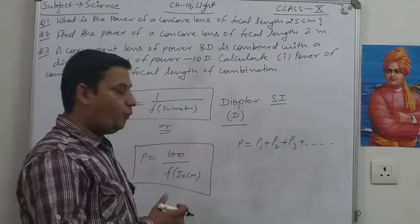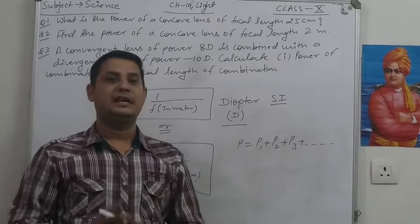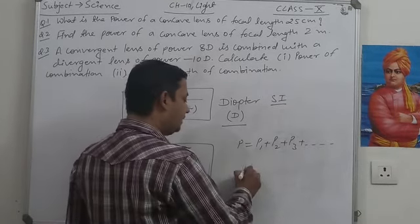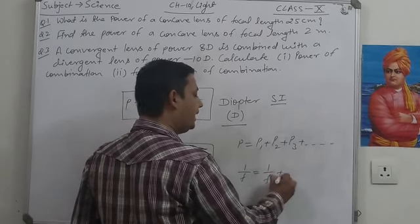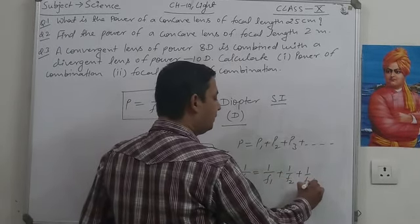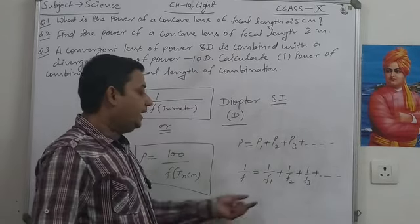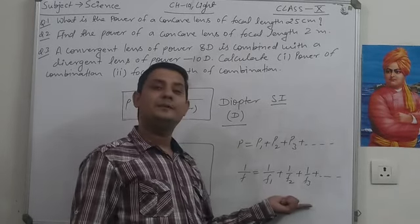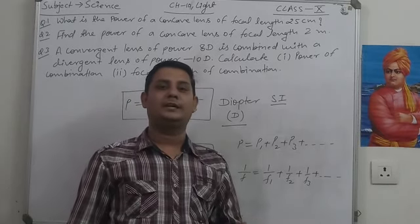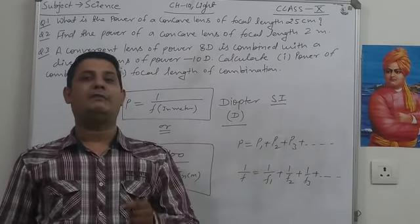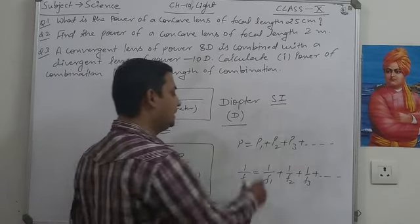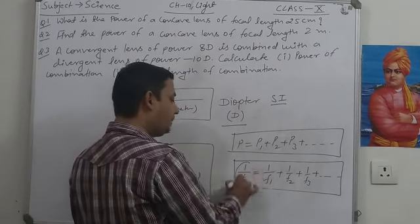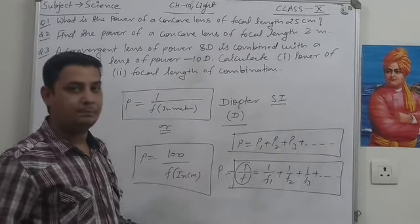If the focal lengths of different lenses in the combination are given and we want to calculate the resultant focal length or resultant power, we will use the formula: 1 upon f is equal to 1 upon f1 plus 1 upon f2 plus 1 upon f3 and so on. This is the formula in terms of focal length, and 1 upon f equals the power of the lens.